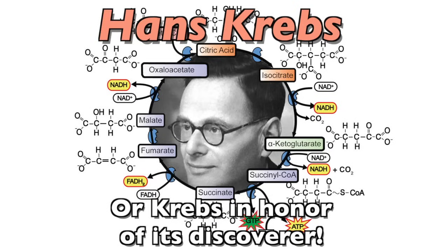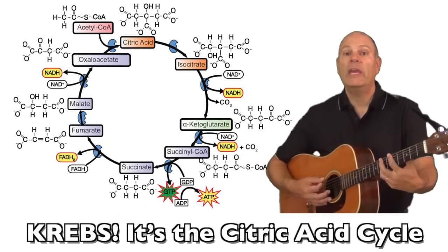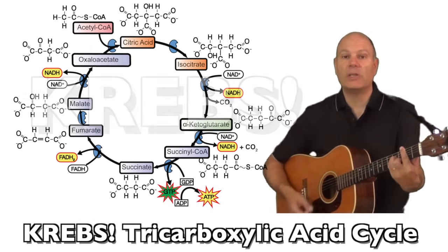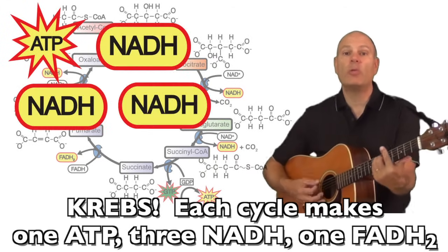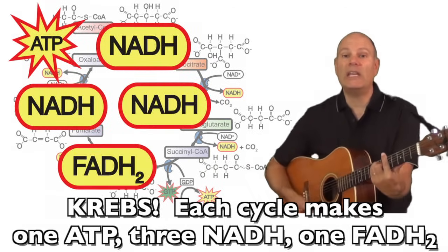It's acronyms that you prefer in Krebs, in honor of its discoverer Krebs. It's a citric acid cycle Krebs, tricarboxylic acid cycle Krebs. Krebs cycle makes 1 ATP, 3 NADH, 1 FADH2.